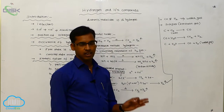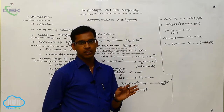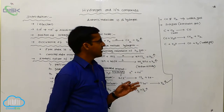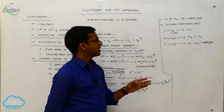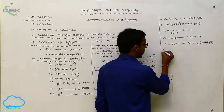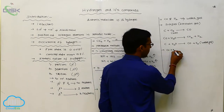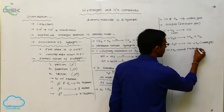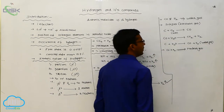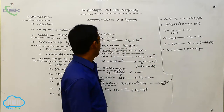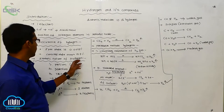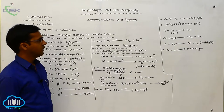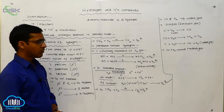Water gas: carbon monoxide reacts with hydrogen to produce methanol — this is synthetic gas. The mixture of carbon monoxide and nitrogen is called producer gas. These are the preparation methods of hydrogen: laboratory preparation, industrial method, and use of syngas or water gas.